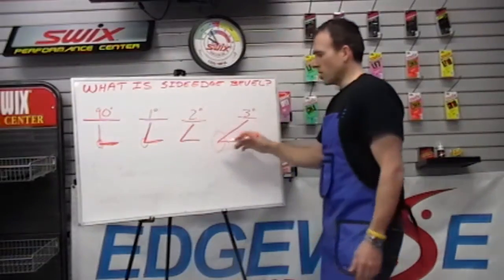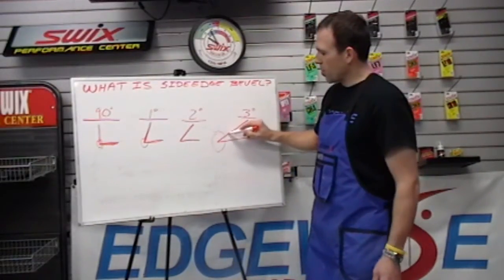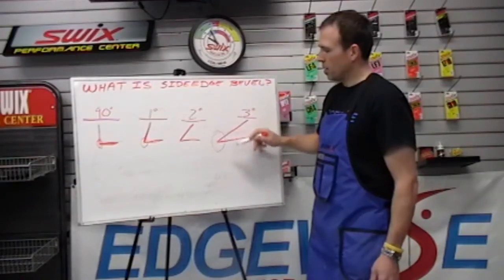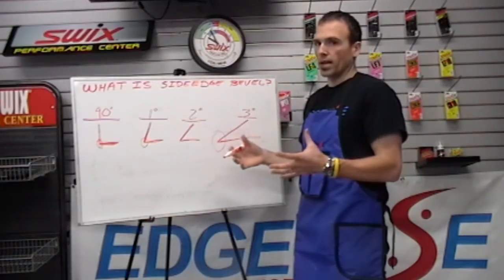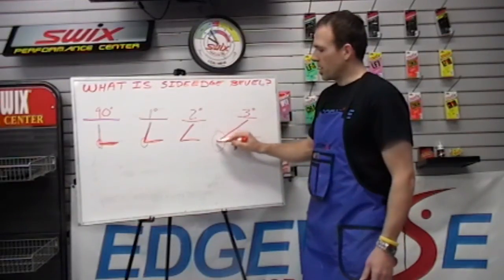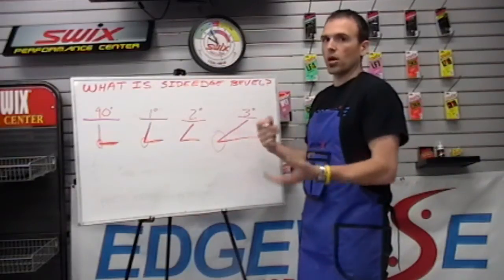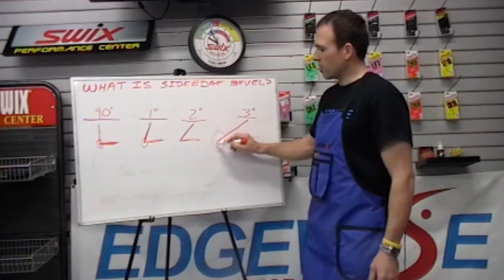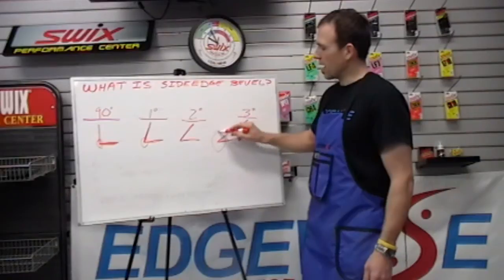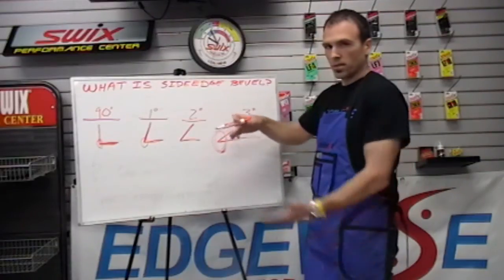Whereas when you go with a steeper angle like a 3 degree, obviously that point is very sharp. It offers great edge hold on ice, but it's harder to maintain so you have to sharpen it more. And also if you hit a rock with a 3 degree, the damage is going to be pretty severe because of the sharp angle.